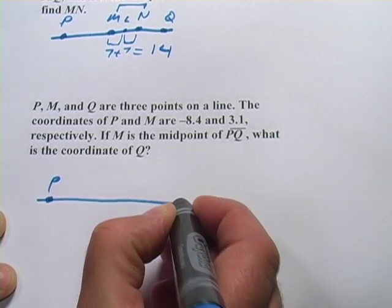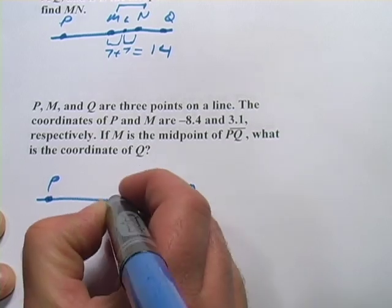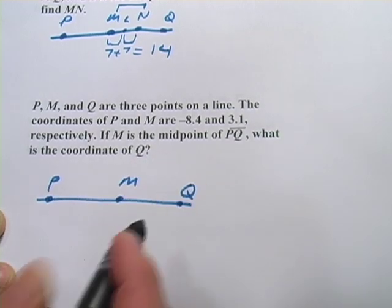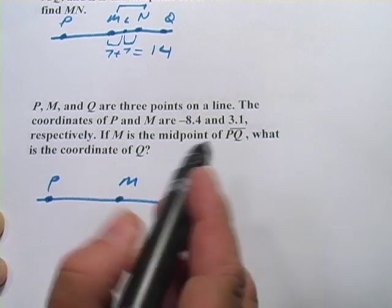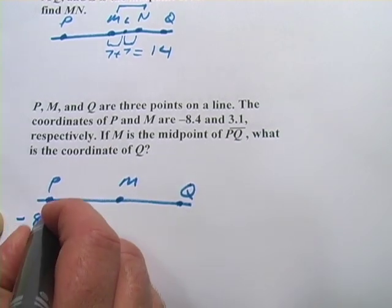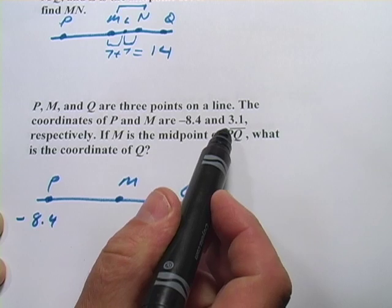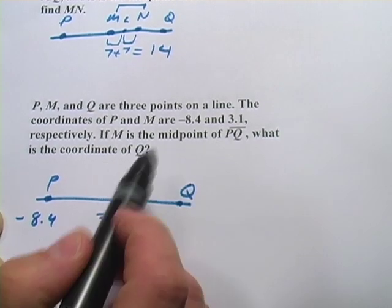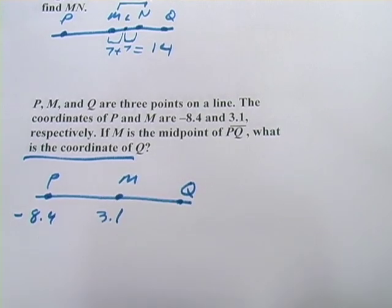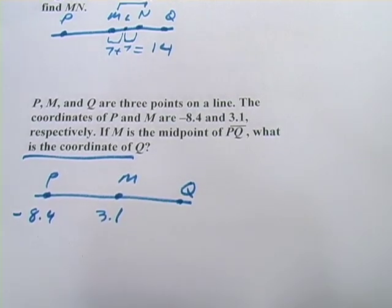So here's P, here's Q. They've told us M is the midpoint, so we'll stick it in the middle here. And then they're giving us a couple of coordinates. P is negative 8.4, M is 3.1, and we want to find the coordinate of Q. So this is a lot like the first one we did.